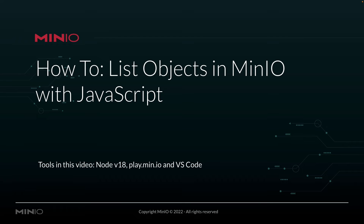Hey folks, Will with Min.io here with a how-to. Today we're going to be listing objects in Min.io using JavaScript. We're going to be using Node V18, connecting to play.min.io, which is our online sandbox for Min.io users, and we're going to be doing all of this out of Visual Studio Code. Let's take a look.